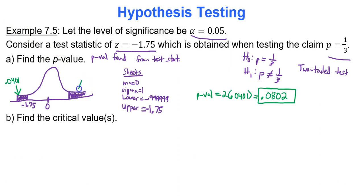Because the left tail has an area of 0.0401, by symmetry the right tail also has an area of 0.0401. Be careful with two-tailed tests — don't just take the output from Google Sheets as your answer. You have to double it for a two-tailed test.